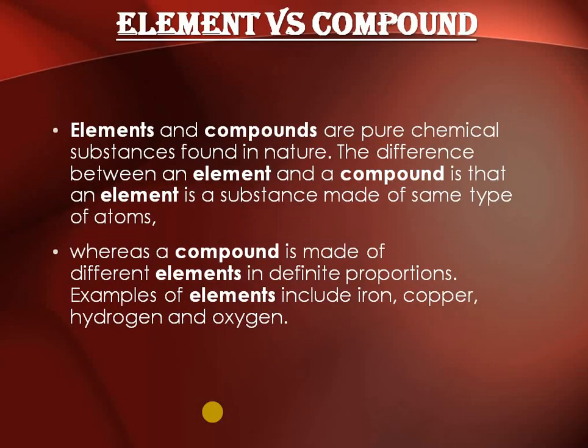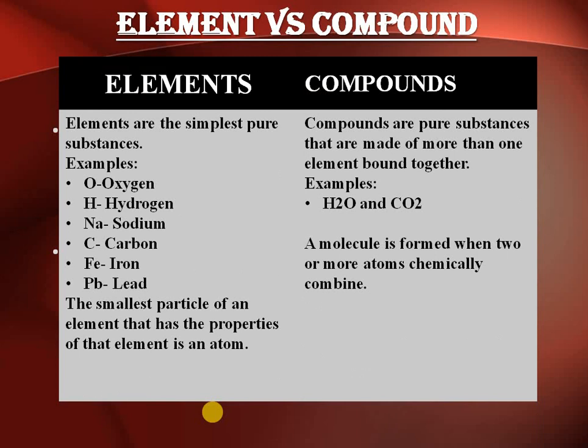Now, element versus compound: what is the difference? Both element and compound are pure chemical substances found in nature. The difference is that an element is made up of the same type of atoms, but a compound is made up of different types of elements in a fixed proportion. Elements like iron, copper, and hydrogen — when these combine, for example iron and oxygen combine to form rust (iron oxide), that forms a compound.